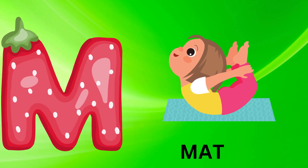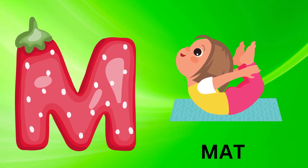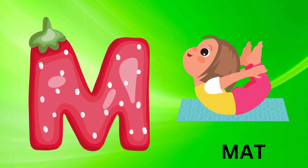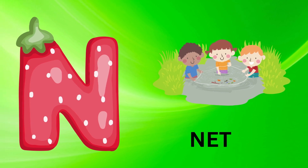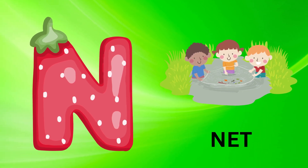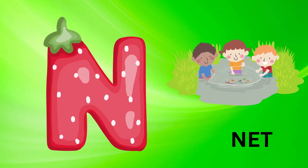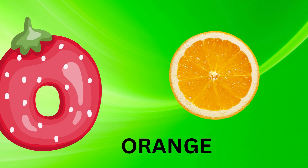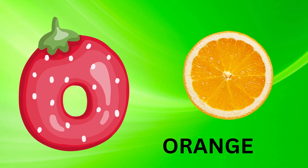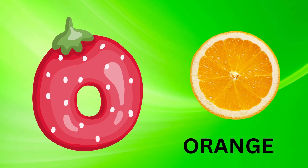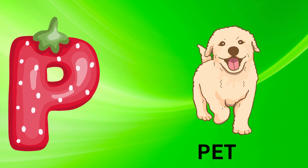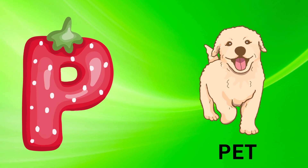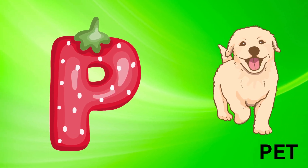M is for mat, m-m-mat. N is for net, n-n-net. O is for orange, o-o-orange. P is for pet, p-p-pet.